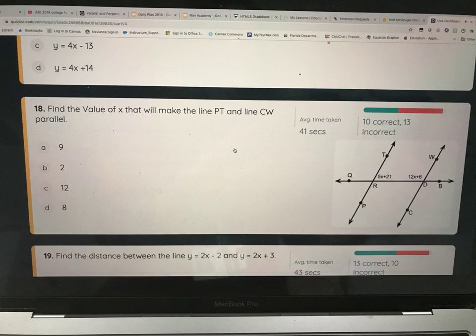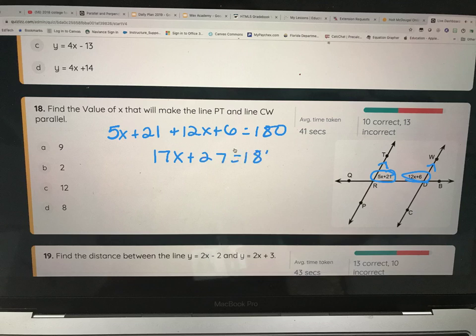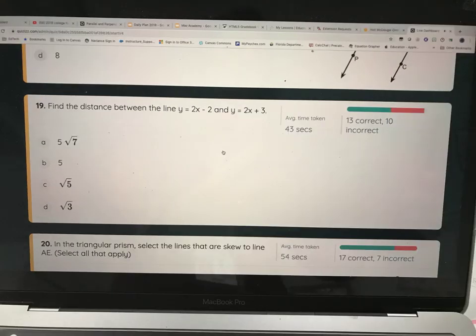Find the value of X that would make the line PT, which is this one, and line CW parallel. So if those are parallel, and I look at these angles, they're called what? Consecutive interior. For those to be parallel, what would have to be true about those angles? Equal 180. Good. 5X plus 21 plus 12X plus 6 would have to equal 180. 17X plus 27. Keep going because I don't want to do this in my head. X equals 9.